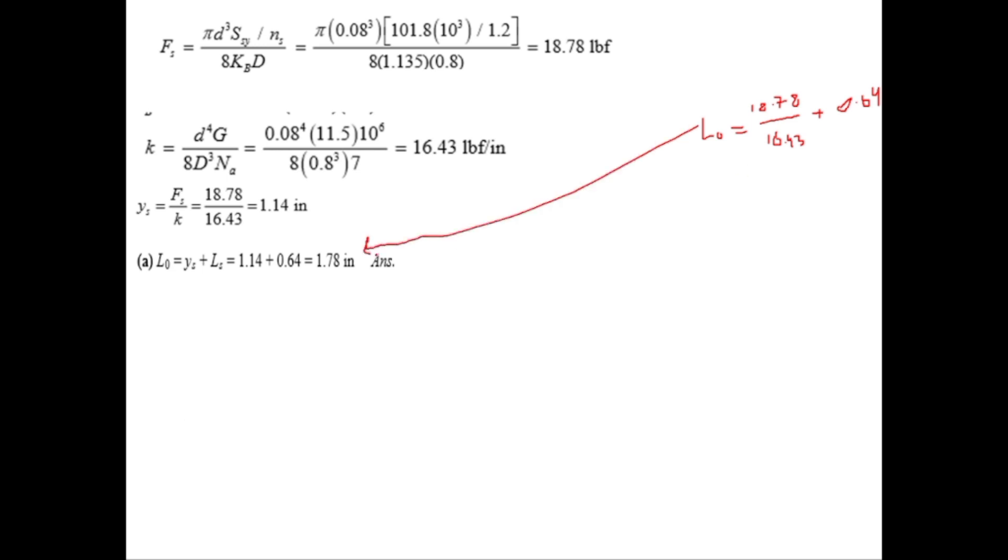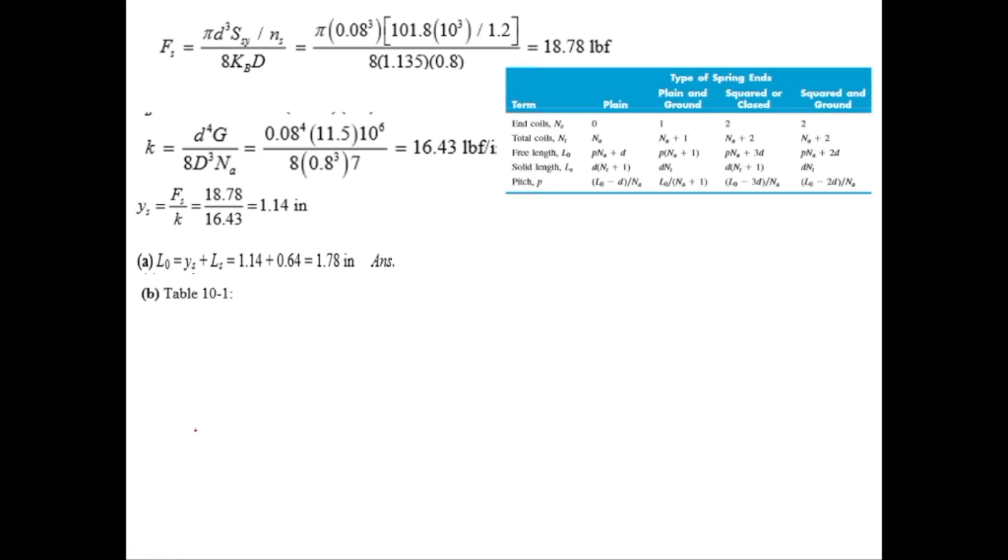We are required to find the pitch, so using table 10.1, pitch equals L0 divided by NA plus 1. Since NA plus 1 equals NT, pitch equals L0 divided by NT. With L0 as 1.78 and NT as 8, P equals 0.223 inches.